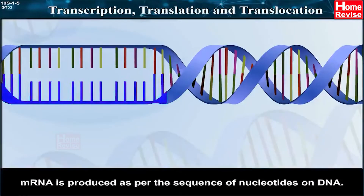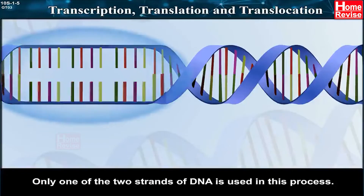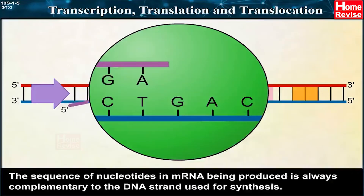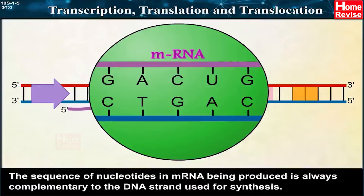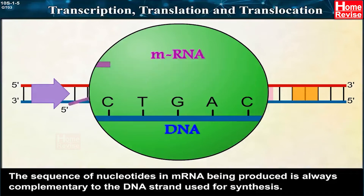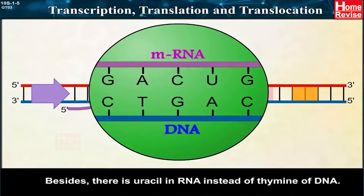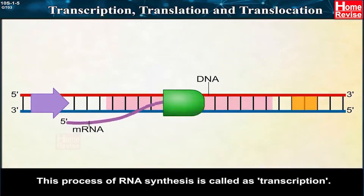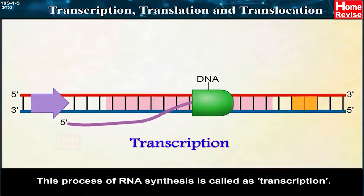mRNA is produced as per the sequence of nucleotides on DNA. Only one of the two strands of DNA is used in this process. The sequence of nucleotides in mRNA being produced is always complementary to the DNA strand used for synthesis. There is uracil in RNA instead of thymine in DNA. This process of RNA synthesis is called transcription.